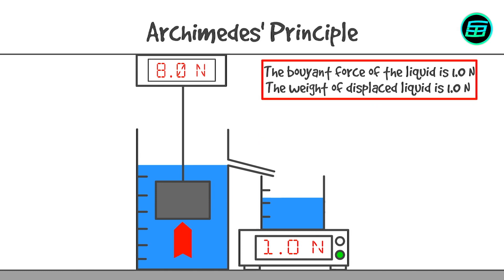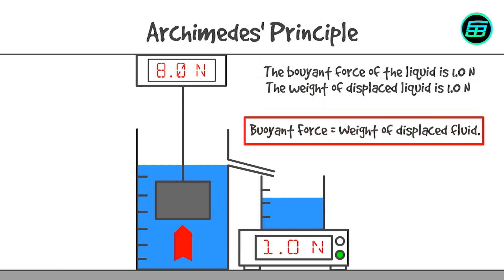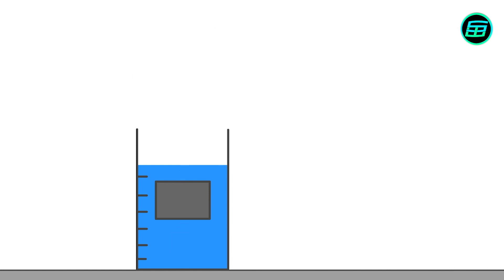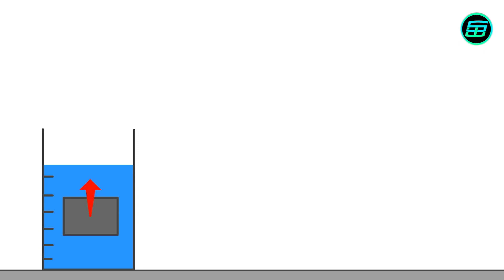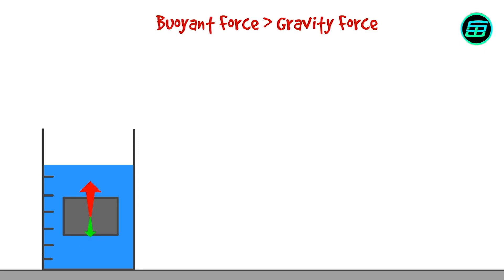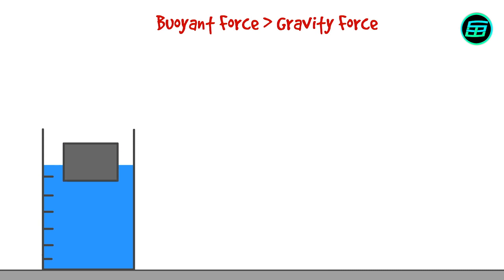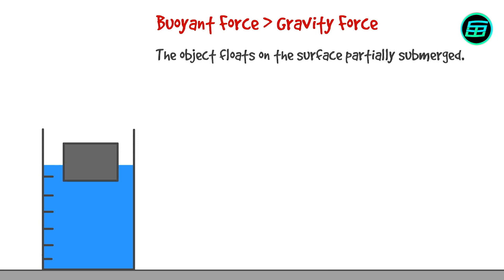So we can calculate the buoyant force by measuring the weight of displaced fluid. Think about a fully immersed object. The buoyant force tries to lift the object to the surface, whereas gravity tries to pull the object to the bottom. If the buoyant force is greater than the force of gravity, then the object will accelerate upward, rise to the surface, and then float on the surface partially submerged.